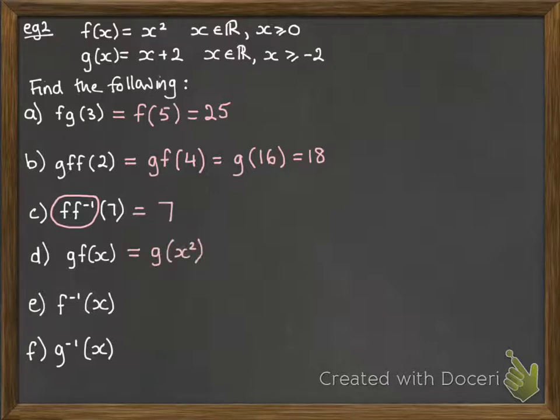g of f of x, we're doing this in general terms now. f(x) is x squared, so we're doing g of x squared. That means we're going to take that x squared and put it into the place of x on the g function. So that becomes x squared plus 2.